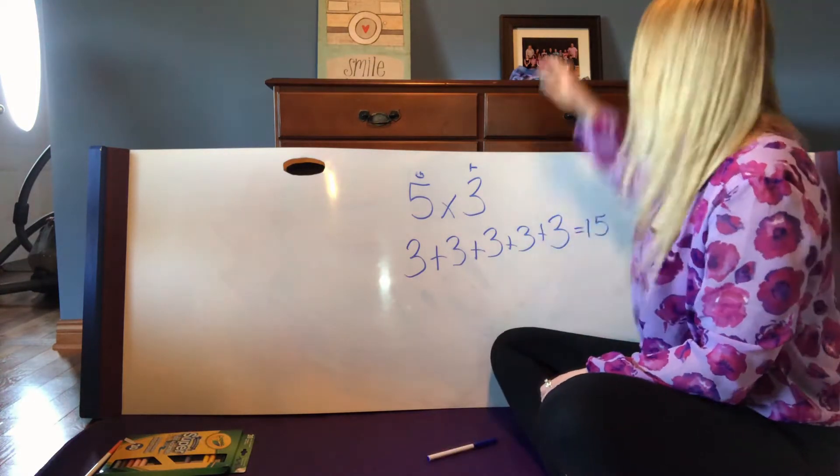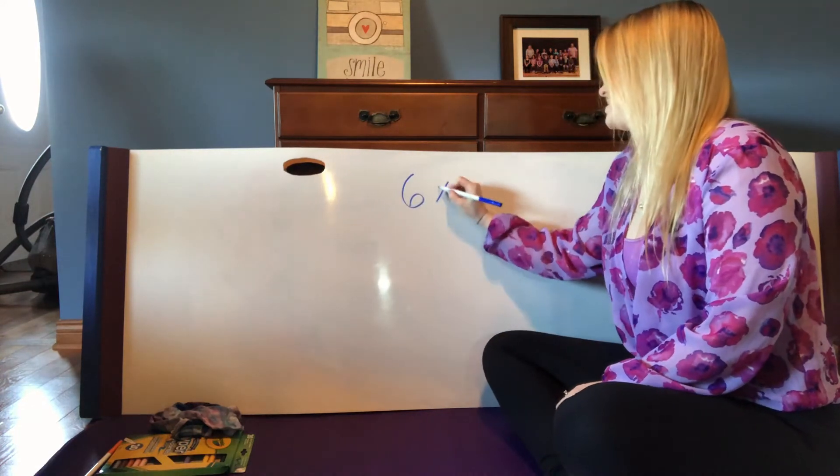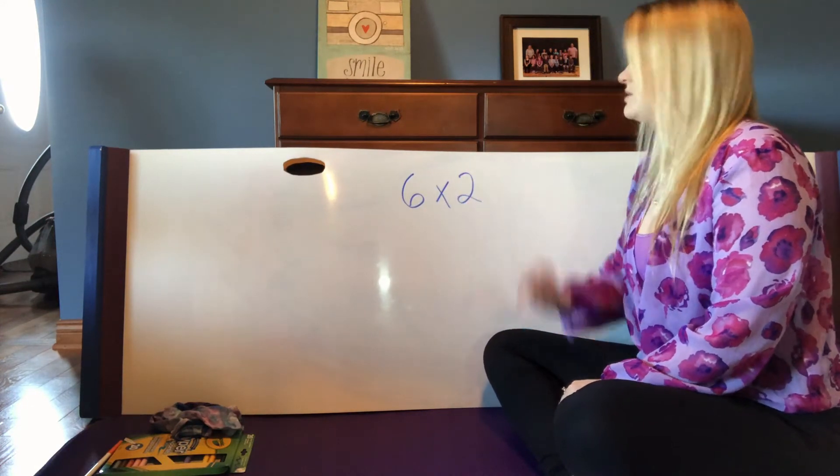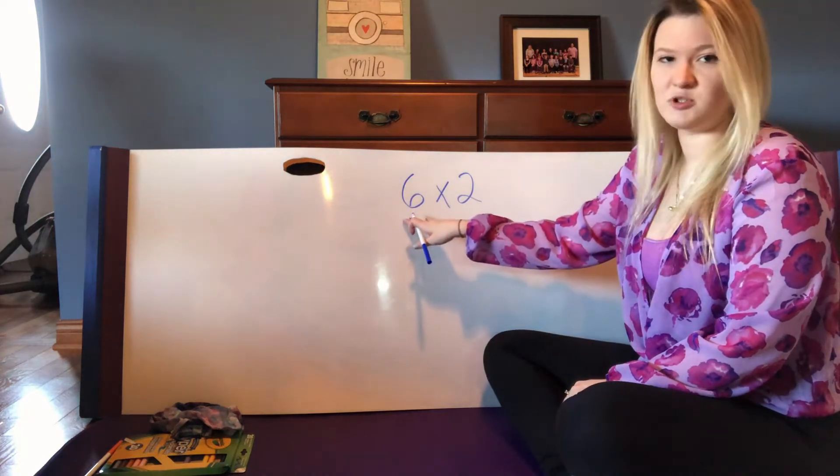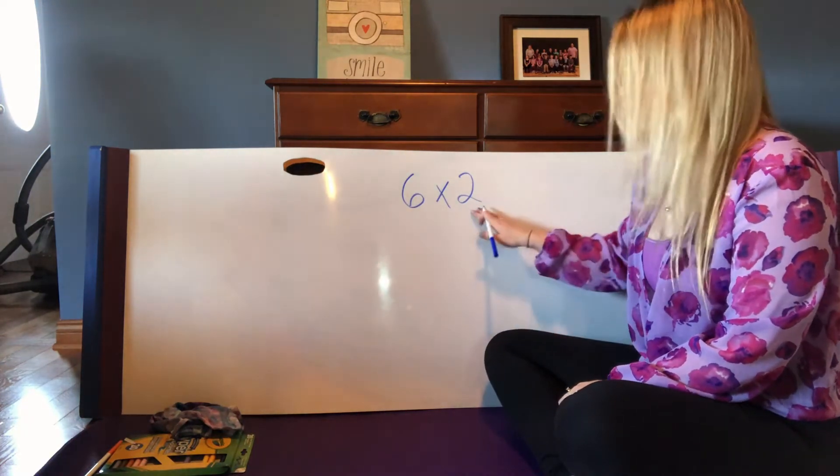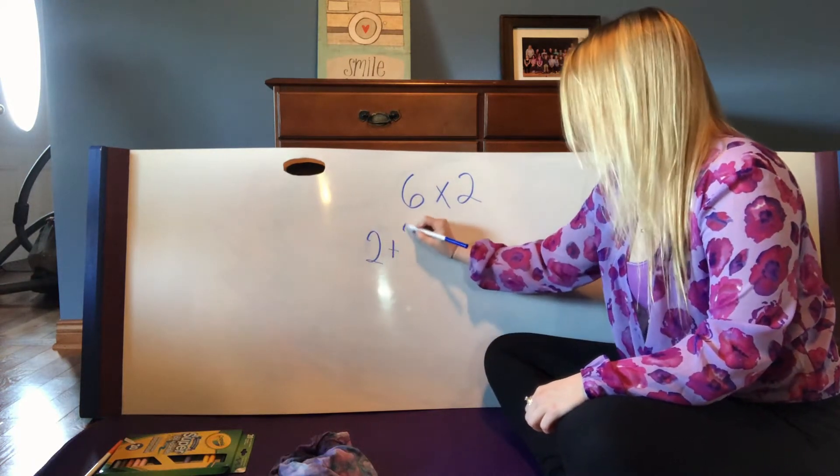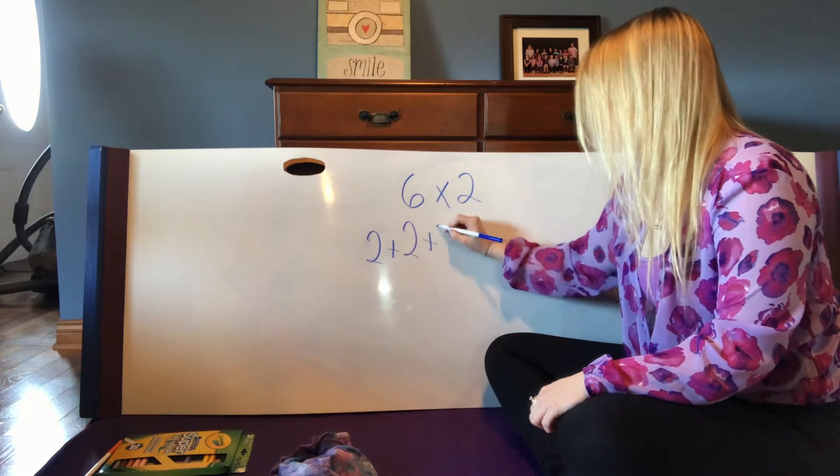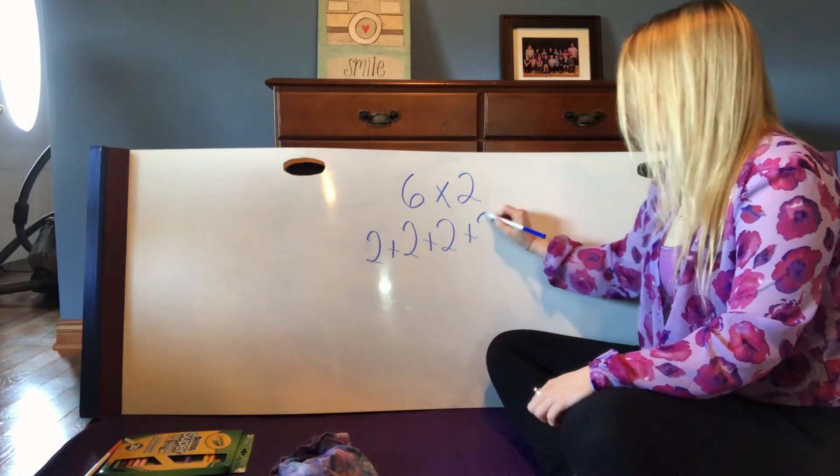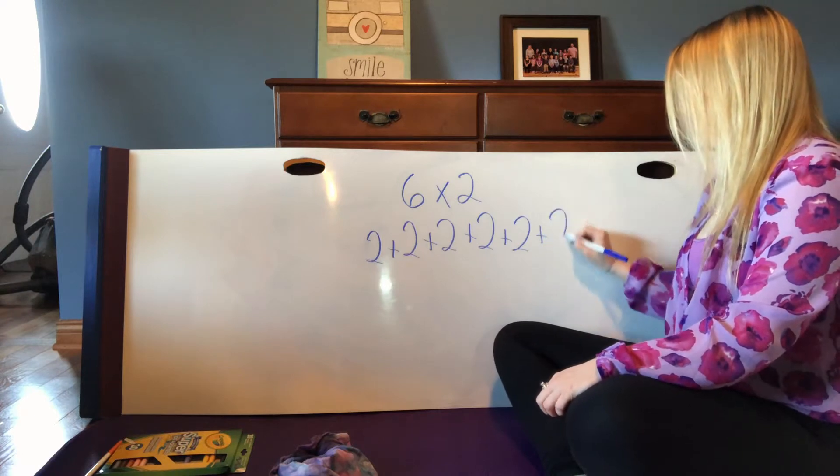Let's try another one. This time, let's try 6 times 2. So this time, we know we have 6 groups with 2 things in them. So we need 6 twos. So we have 1, 2, 3, 4, 5, 6.